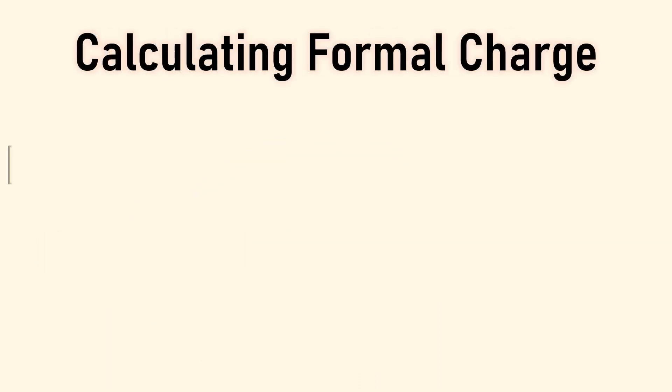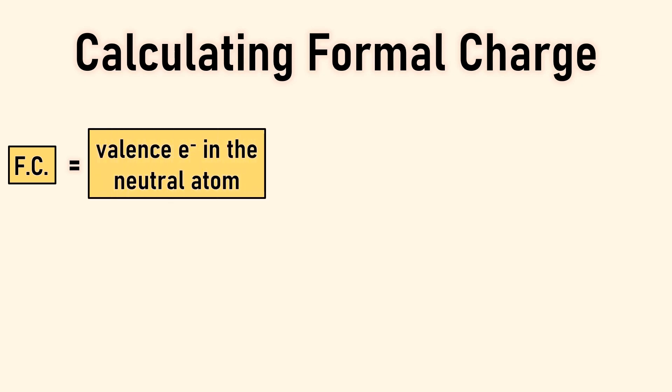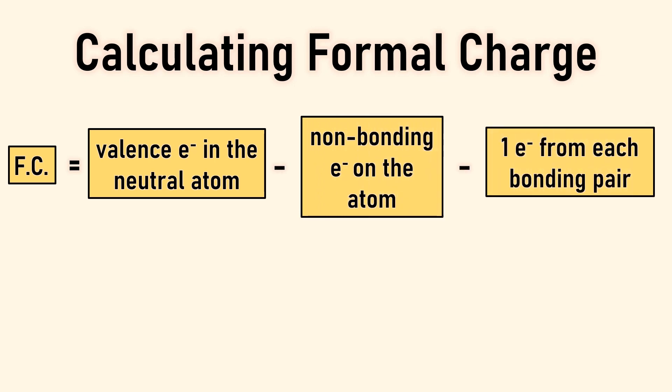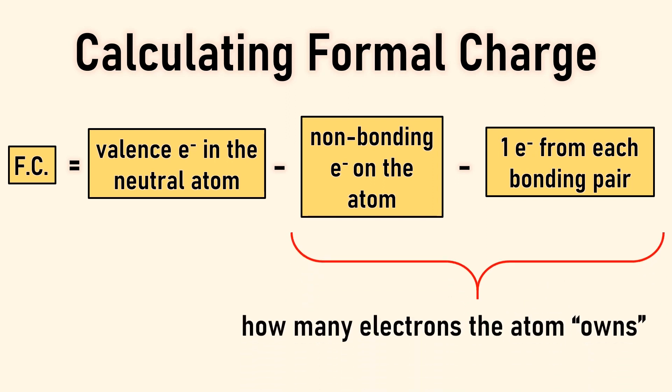The formula to find formal charge for an atom is to start with the number of valence electrons in the neutral atom, then subtract the number of non-bonding electrons, then subtract one electron from each bonding pair. These are the electrons the atom owns.